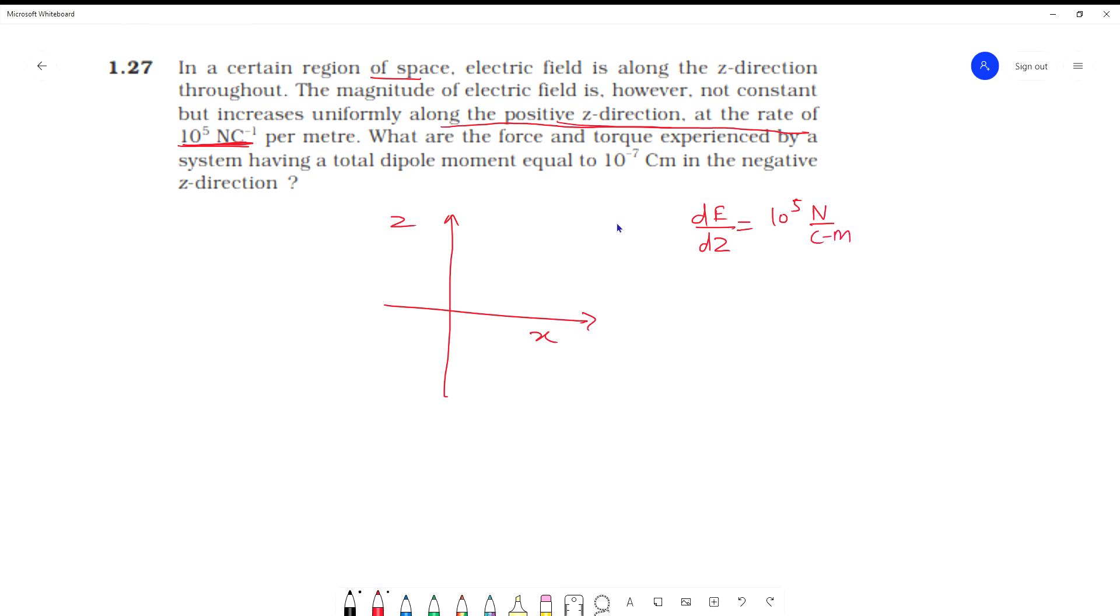What are the force and torque experienced by a system having a dipole moment equal to 10 raised to power minus 7 Coulomb meter in the negative z direction? The dipole moment value is 10^-7 Coulomb meter.